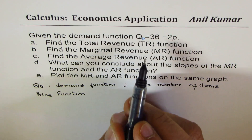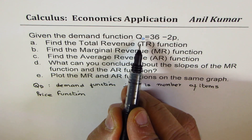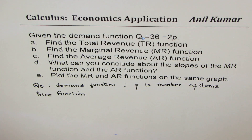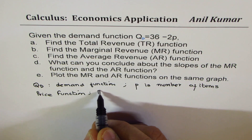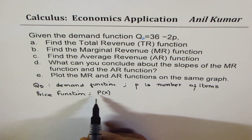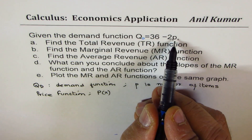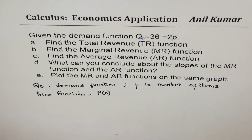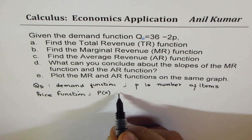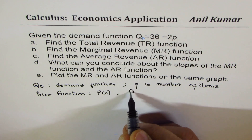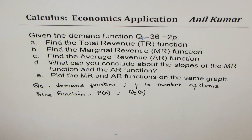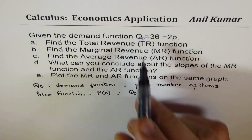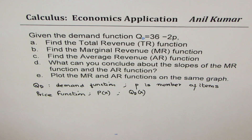The price function represents the price at which items are being sold. We sometimes write this as P(x), meaning price function with units sold. Similarly, the demand function q_d could also be written as q(x) with respect to the number of items being sold. I hope you're getting this concept of functions.